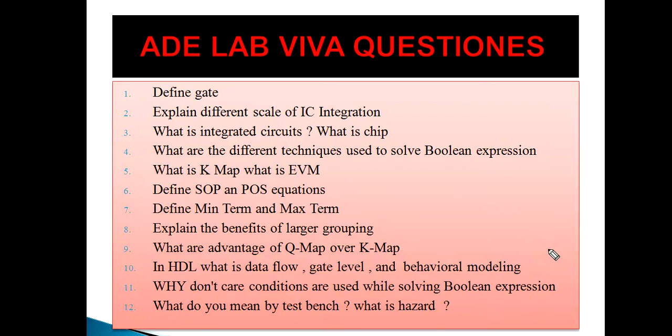What is the advantage of QMAP over KMAP? KMAP is fine for up to 4 variables. Once the number of variables increases, grouping becomes difficult. Also, grouping in KMAP depends on user ability — one user can group one way and another user can group differently. All these limitations can be overcome by QMAP.